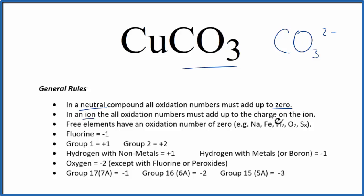In an ion, all the oxidation numbers are going to add up to the charge on the ion. So if we add up all the individual oxidation numbers, we should get minus 2.